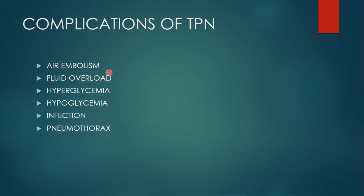First is air embolism. Air embolism is a blockage of the blood supply caused by air bubbles in a blood vessel or in the heart. It may occur if the tubing disconnects and is open to air, or if part of the catheter system is open or removed without being clamped.